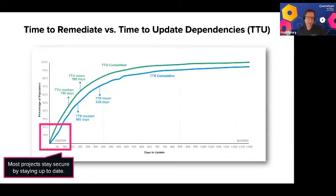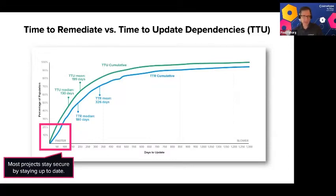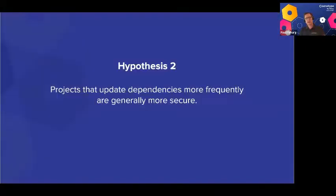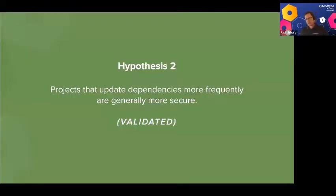When we overlay the mean time to update stale dependencies, it shows a fairly close curve to the remediation time. That led to our next hypothesis: projects that update dependencies more frequently are generally more secure. The data does prove that out — those that update frequently are generally more secure.